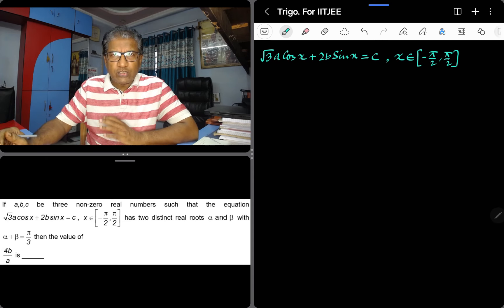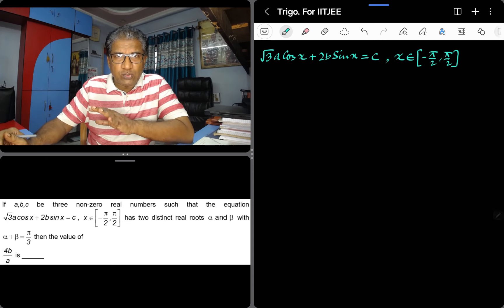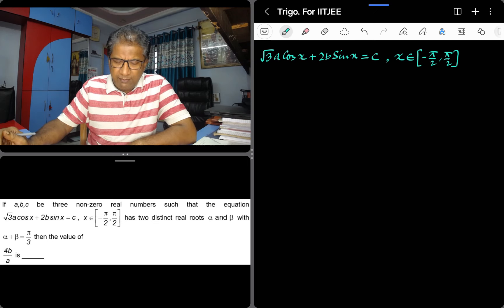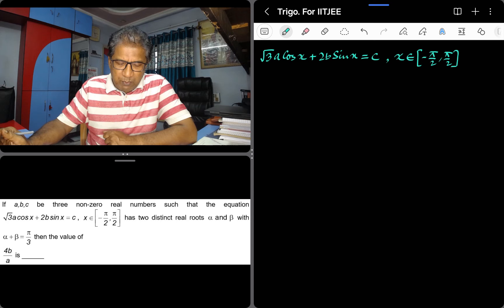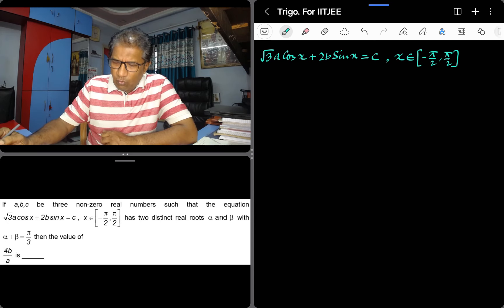It has two distinct roots alpha and beta with the given condition that alpha plus beta is pi over 3. Then what is the value of 4b over a? This is the question.